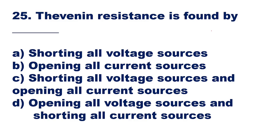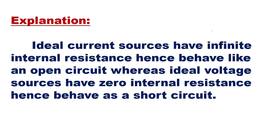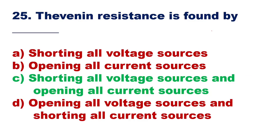Question 25: Thevenin's resistance is found by — options include shorting all voltage sources and opening all current sources. Option C is the right answer. Explanation: Ideal current sources have infinite internal resistance and behave as open circuits, while ideal voltage sources have zero internal resistance and behave as short circuits.